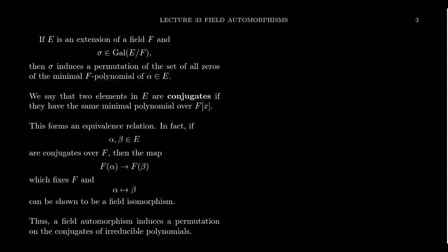If E is a field extension of F, let sigma be an automorphism that belongs to the Galois group of E over F. I'm not assuming that E over F is a Galois extension. This is actually true for any field extension, where the Galois group of E over F is just the set of automorphisms of the field E that fix the base field F.